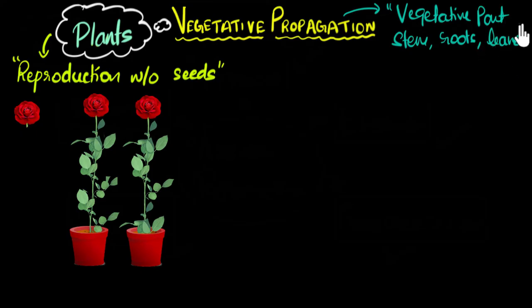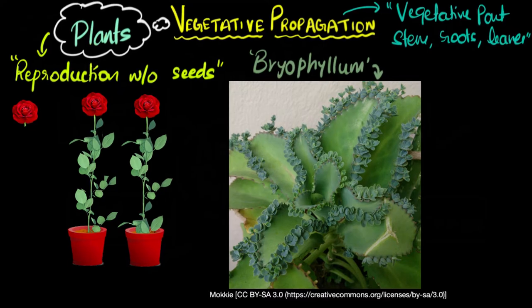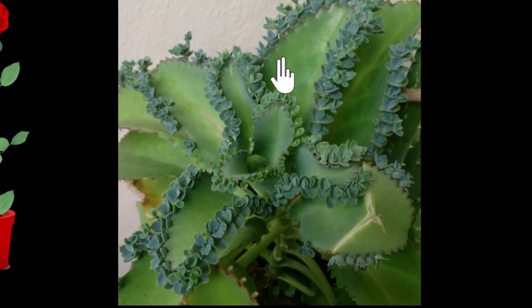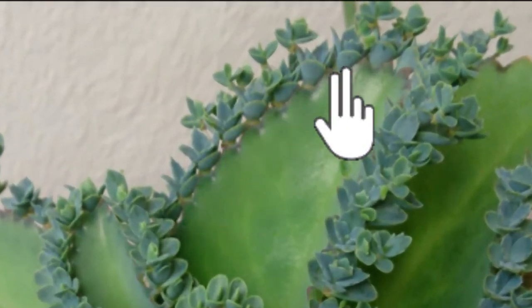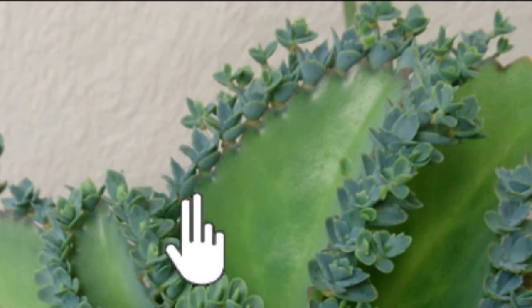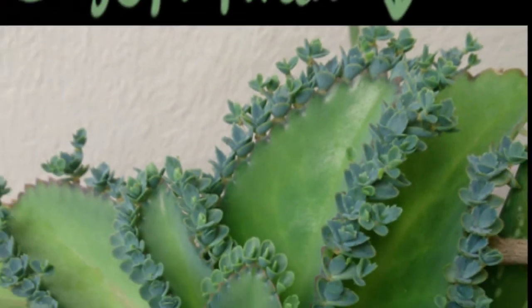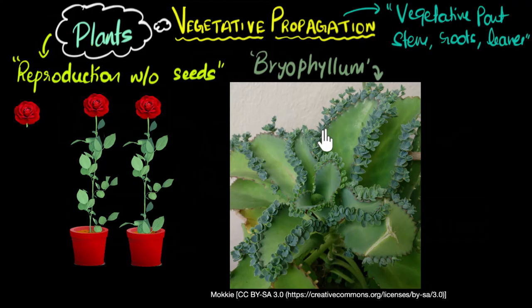Speaking about leaves, that reminds me of a very famous example of vegetative propagation seen in a plant called Bryophyllum. These are actually the leaves of the plant, but if you look carefully, from the tip you can find there are tiny buds growing. These buds grow into their own tiny plants, which we call plantlets — they have their own leaves and their own roots. Eventually the whole leaf becomes heavy, falls onto the ground, and each plantlet can grow into a new Bryophyllum. This is also an important example to remember for your exams.